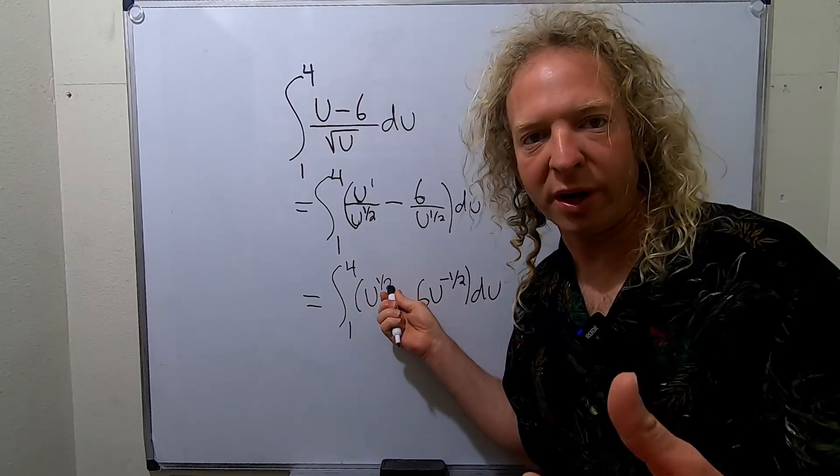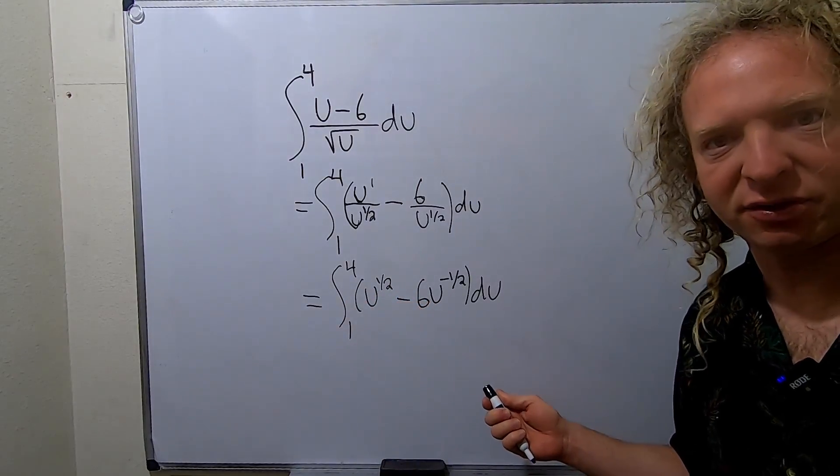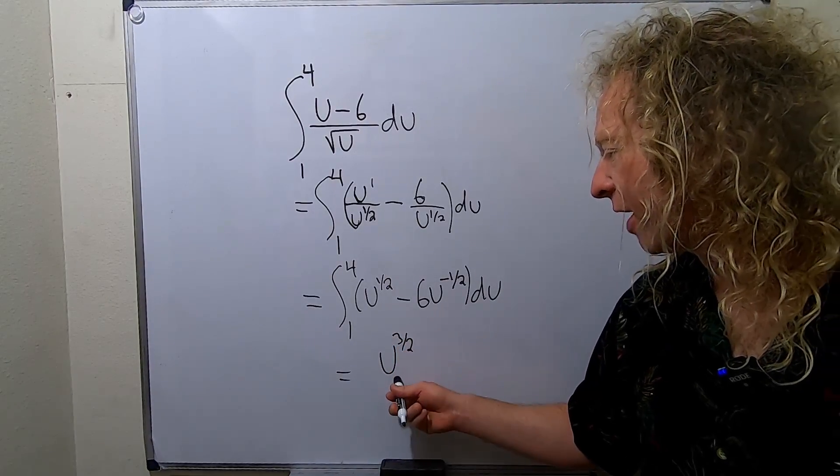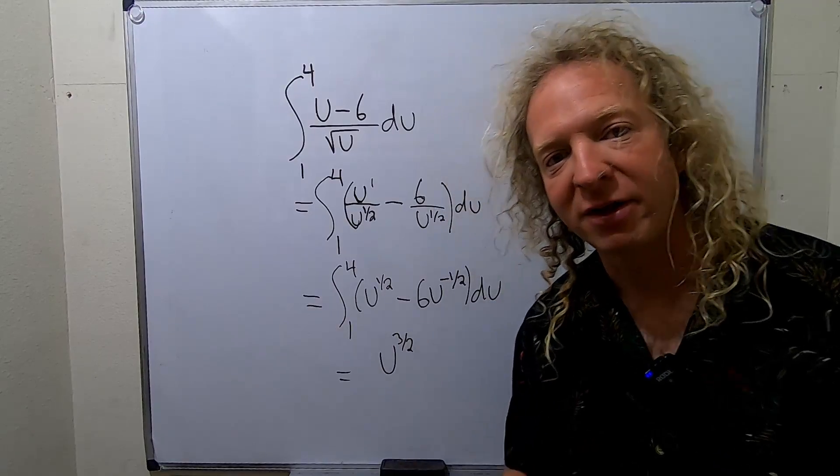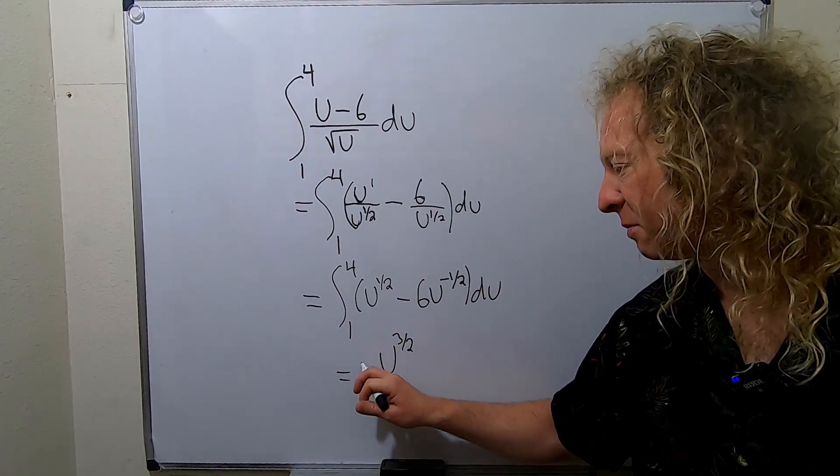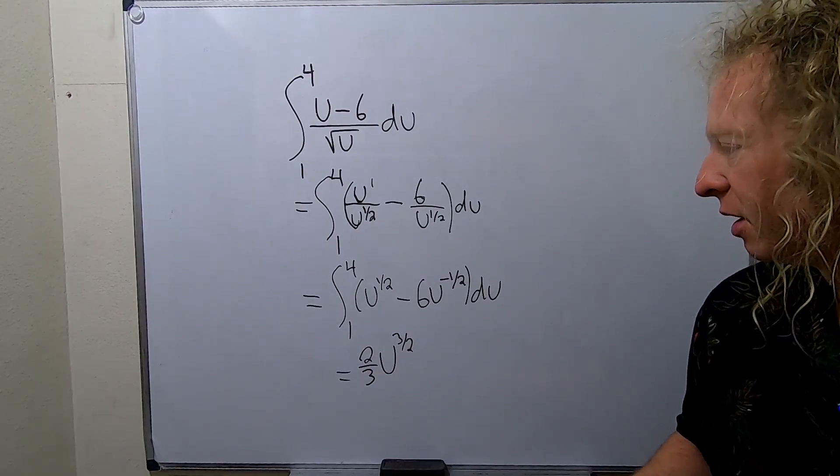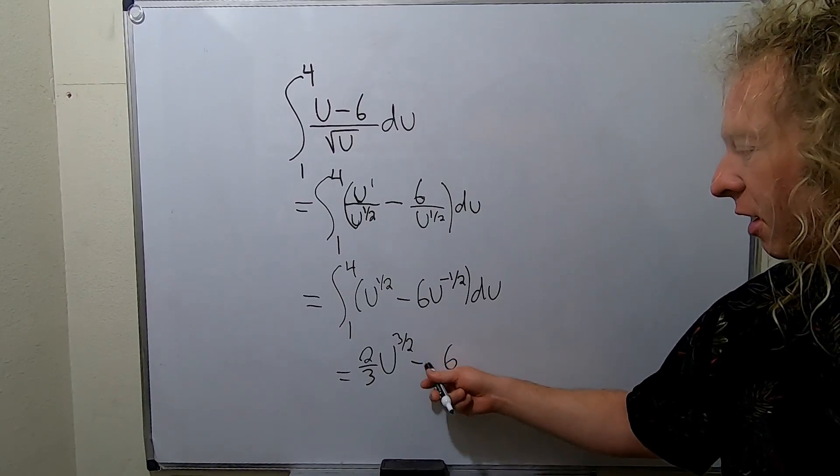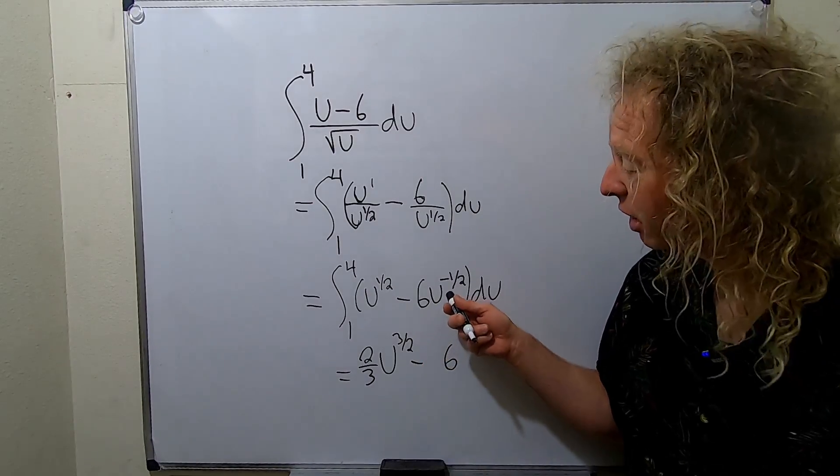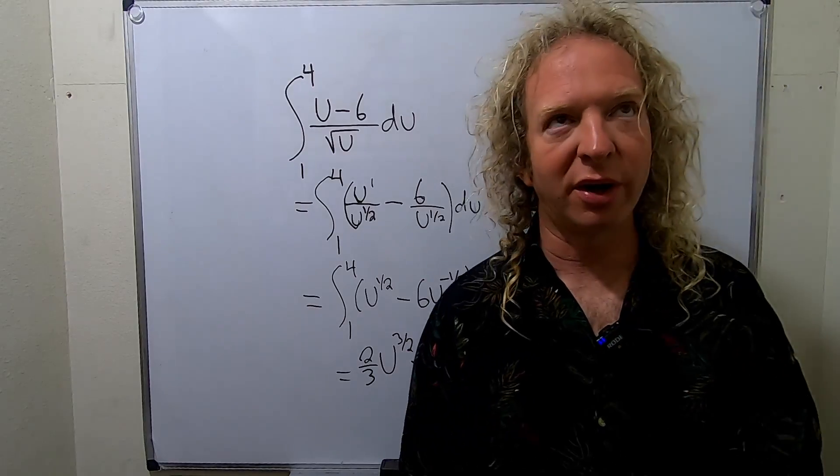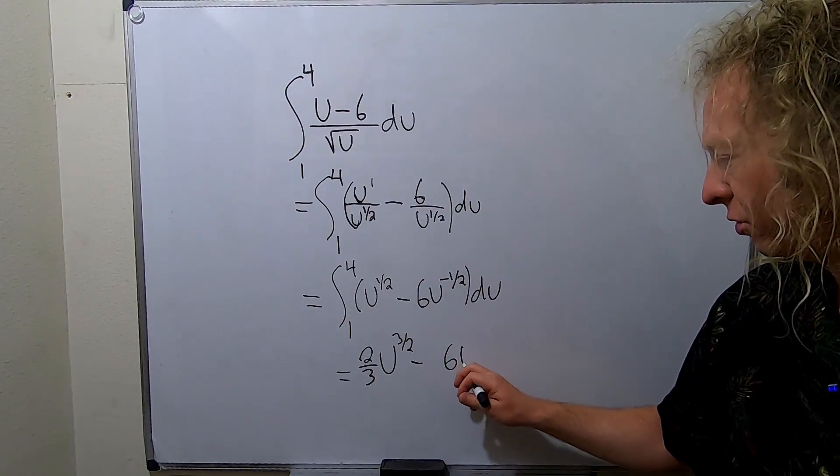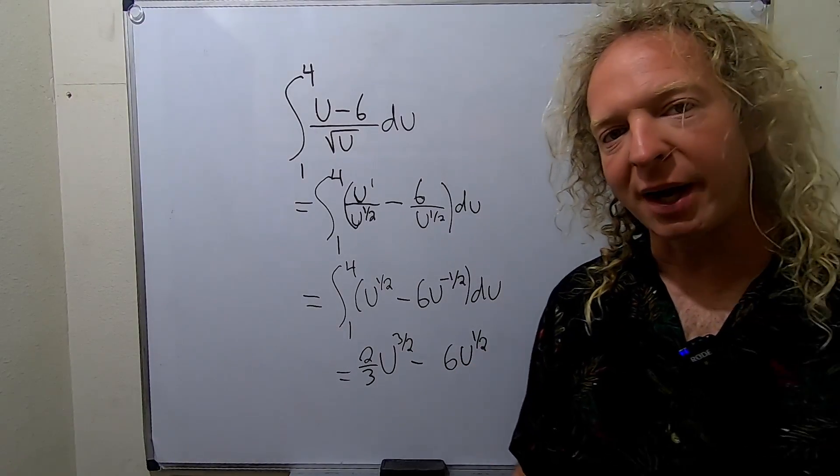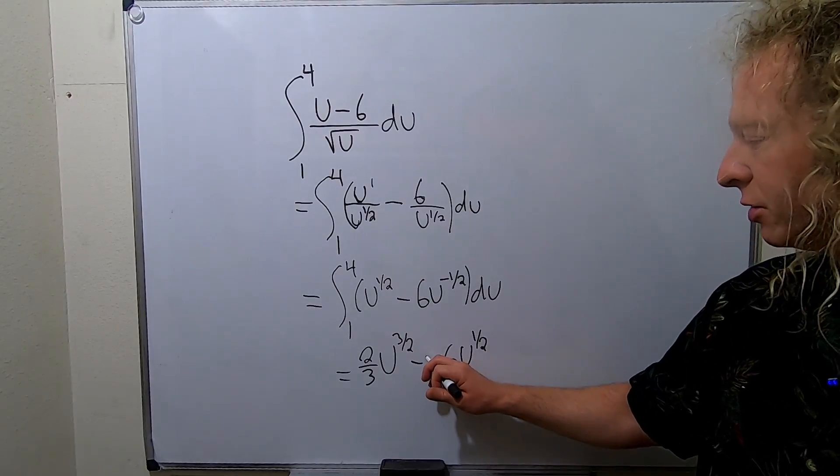We have 1 half plus 1, so it's really 1 half plus 2 halves. That's 3 halves. So this is u to the 3 halves. Then when you divide by 3 halves, you really multiply by the reciprocal. So instead of dividing by 3 halves, I'm going to put 2 thirds here because that's the reciprocal. Same thing here. This one is minus, I'm going to leave some room here, 6. We're adding 1 to this. Negative 1 half plus 1 is 1 half. So this is u to the 1 half. And dividing by 1 half means we multiply by 2.